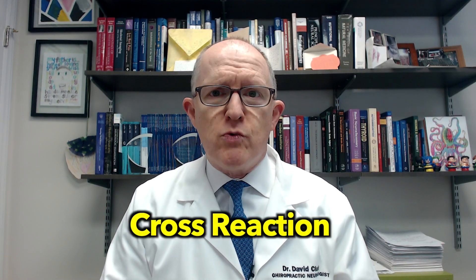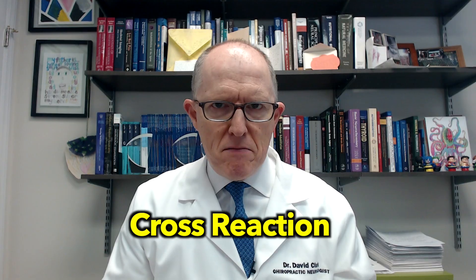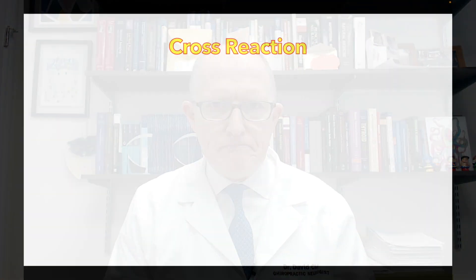With that in mind, let's talk about how do we get there in the first place. Well, there are different infections that can trigger Hashimoto's. What we're talking about is cross-reaction. Let me show you a graphic about what that means. How infections can cause Hashimoto's is through this process called cross-reaction. Sometimes people call it molecular mimicry, and I made this little animation here because I think it does a good job of explaining it.